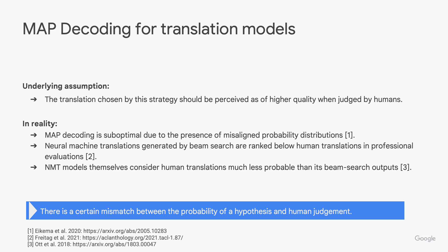Neural Machine Translation, or NMT, typically uses a method called maximum a posteriori, or MAP decoding. This method selects the translations that the model deems most probable given a source sentence. However, research has shown that this approach often results in misaligned probability distributions, leading to a mismatch between the probability of a hypothesis and human judgment. This misalignment means that the most probable translation according to the model is not always the best or most accurate translation, leading to suboptimal translation quality.